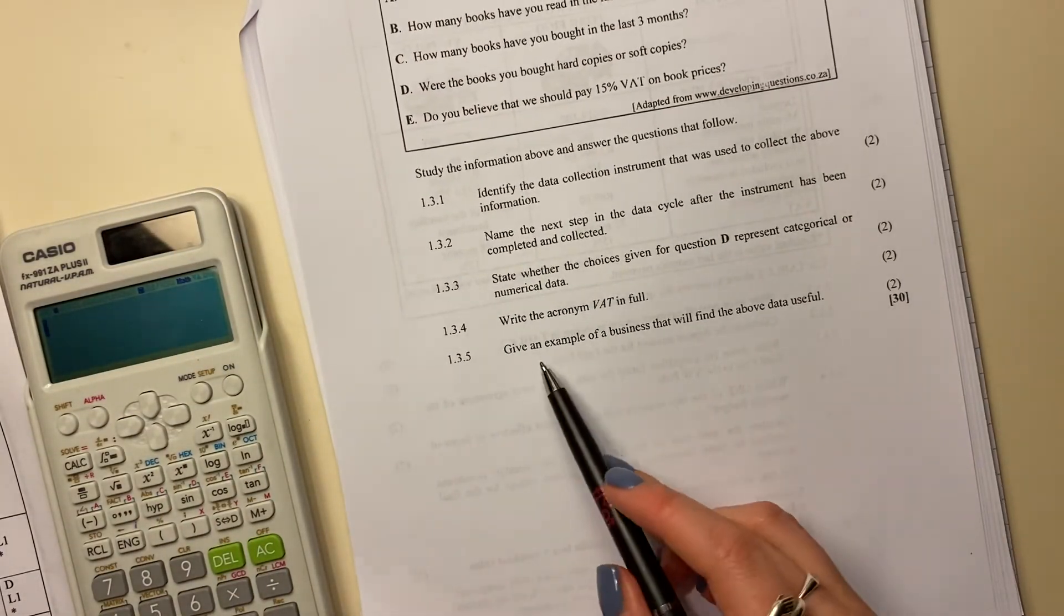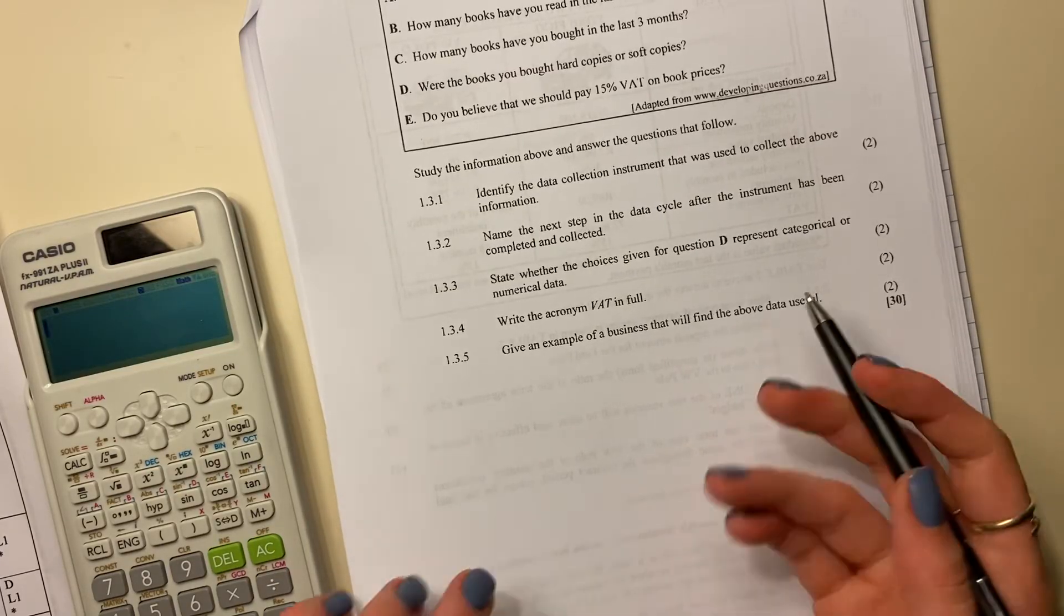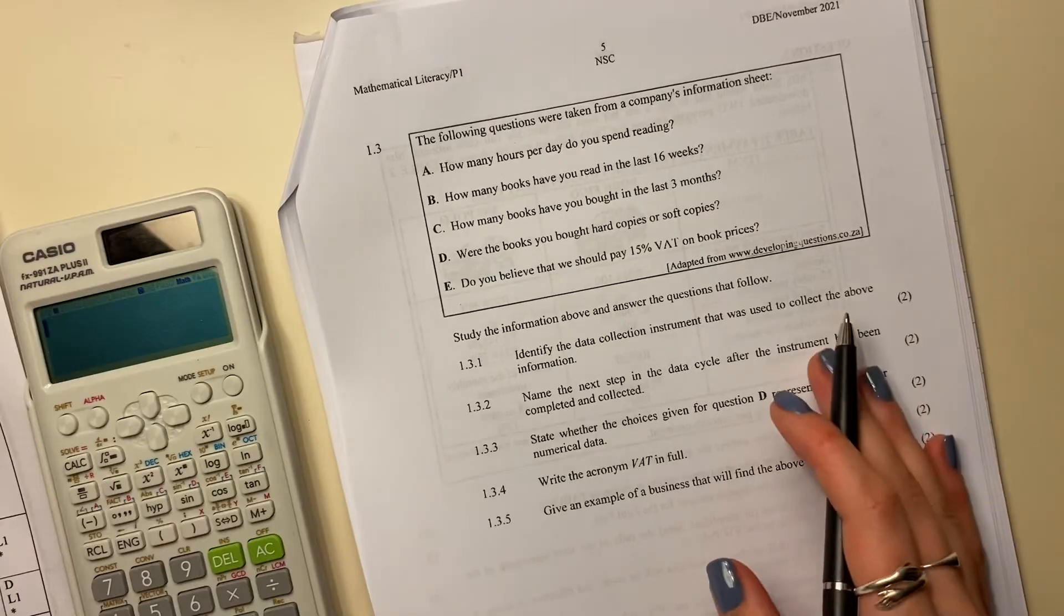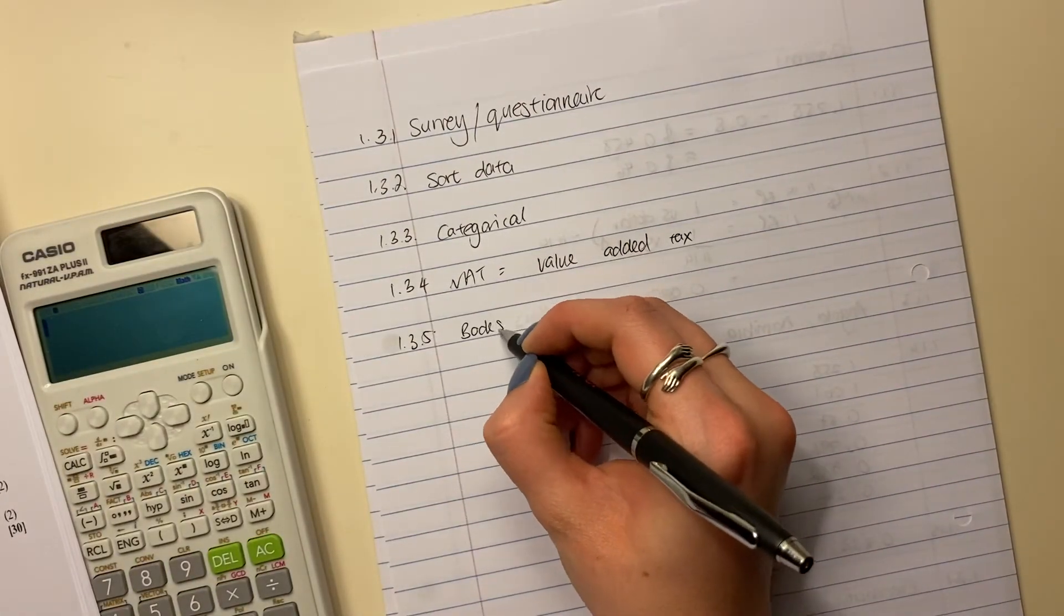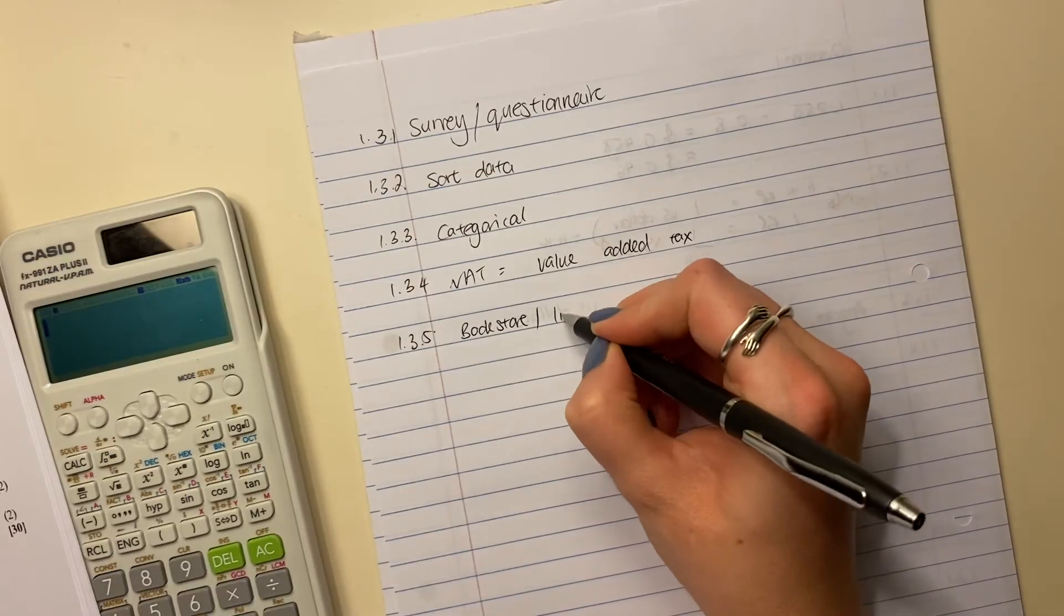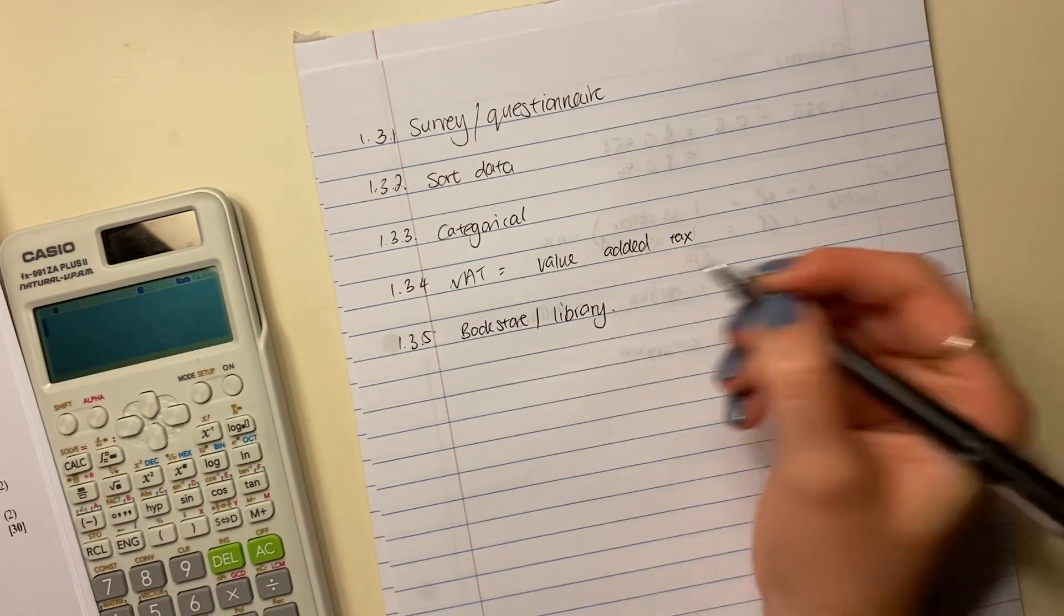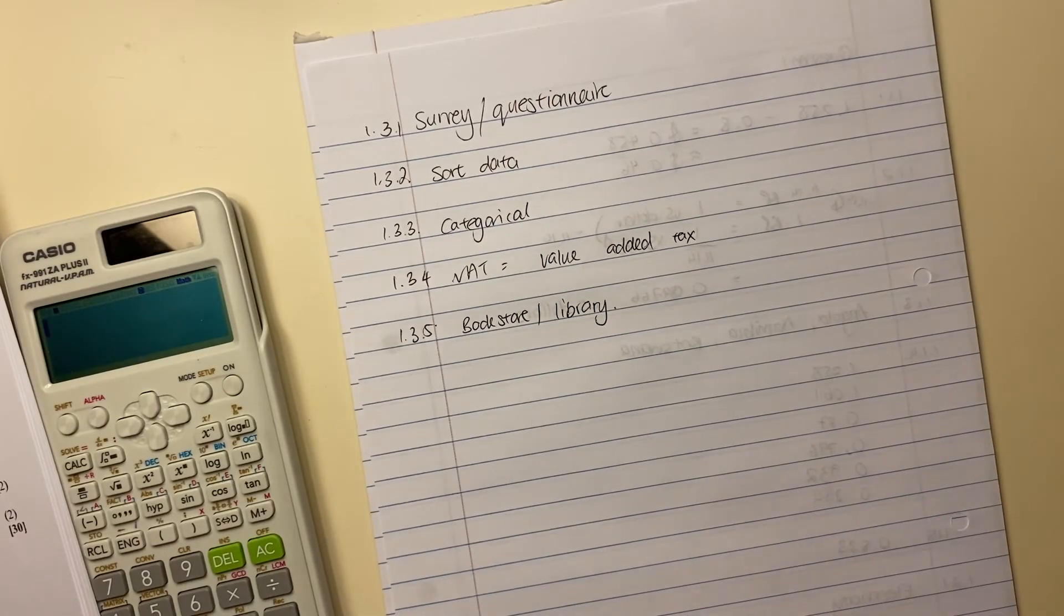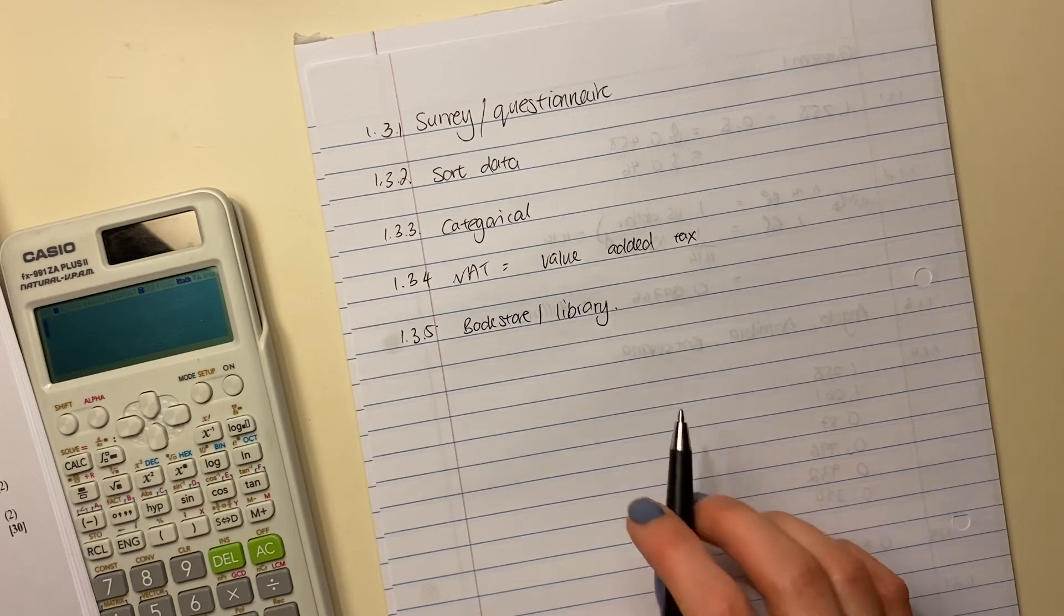Last question for this video. Give an example of a business that will find the above data useful. So what sort of business would find this useful? Probably bookstore, like exclusive books, bookstore, or a library. And then that will be sort of sufficient to get your marks. Okay. That's us done.